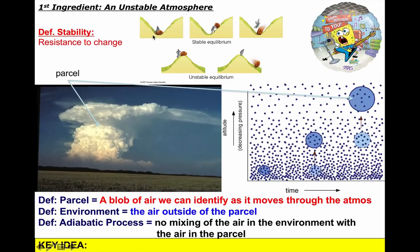On the flip side, check out what happens if you put that boulder on top of a hill. Any small force applied to it will unbalance it — it will be unstable and accelerate away from its initial position. In the atmosphere, we're going to try to figure out how we can get air to accelerate upward all by itself. To do that, I want you to understand the idea of a parcel.